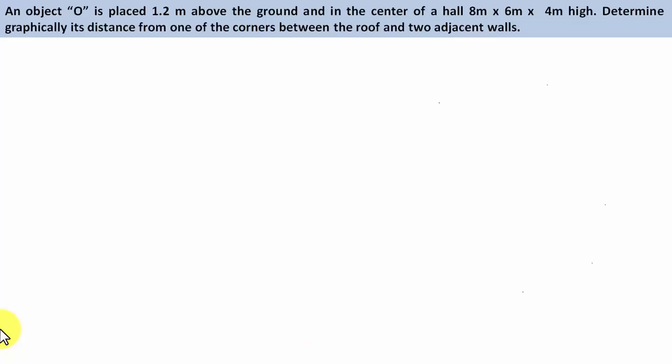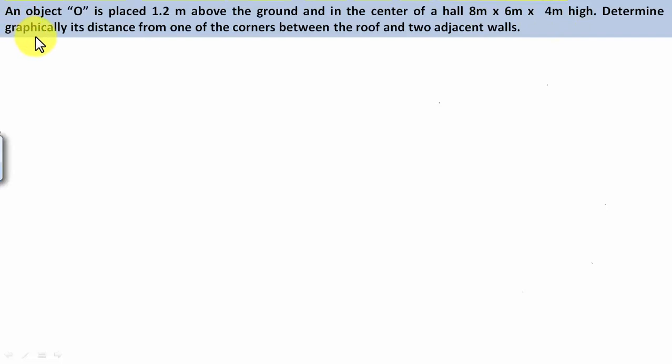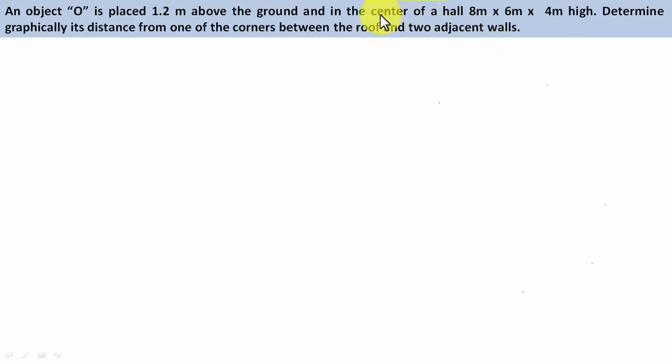So let's kick off today's session with this problem: an object O is placed 1.2 meters above the crown and in the center of a hall 8 by 6 by 4 meters high. Determine graphically its distance from one of the corners between the roof and two adjacent walls.